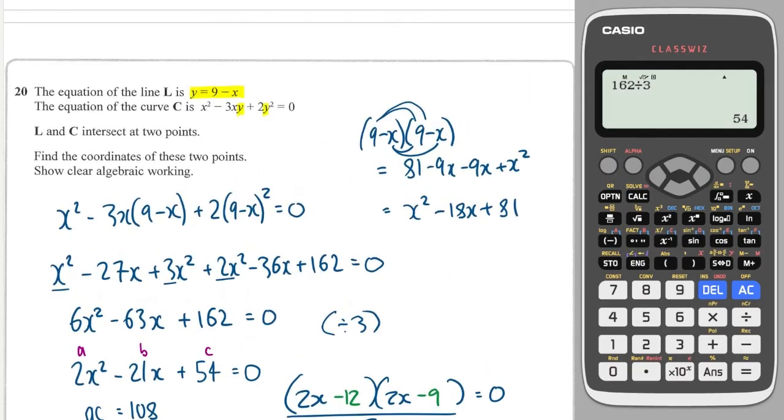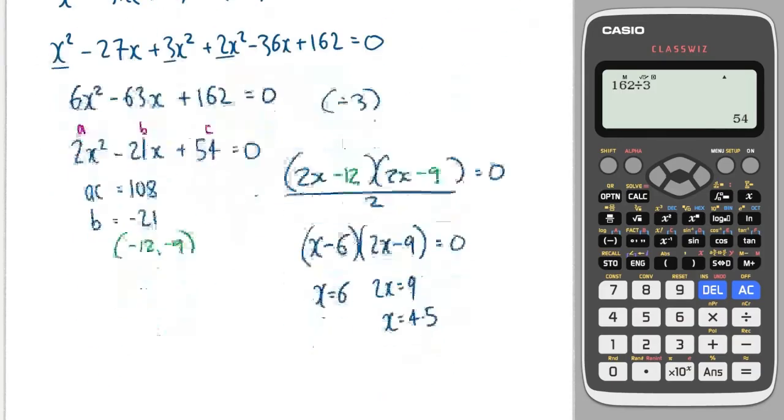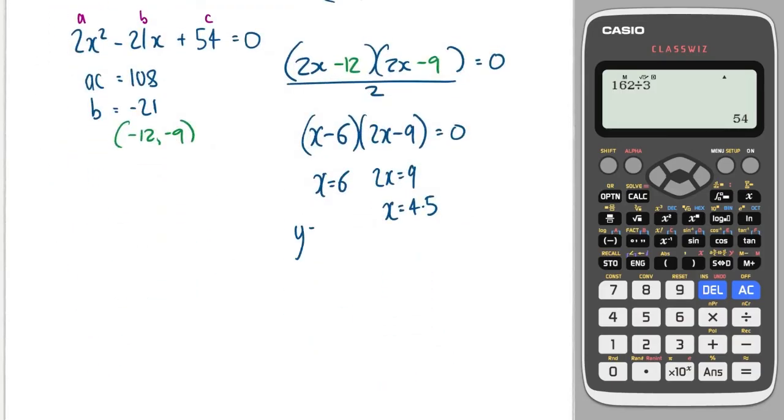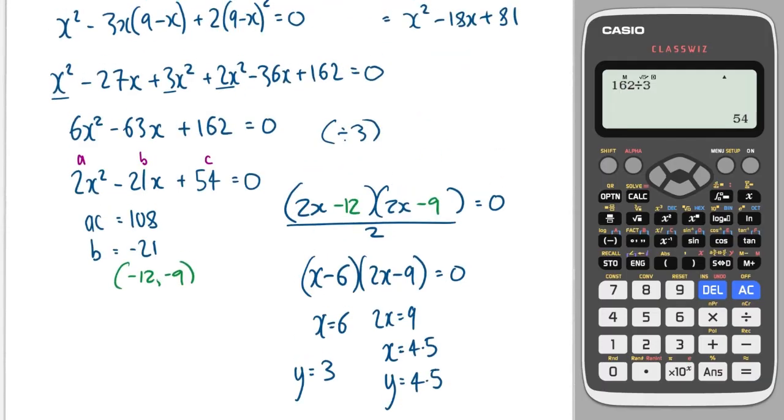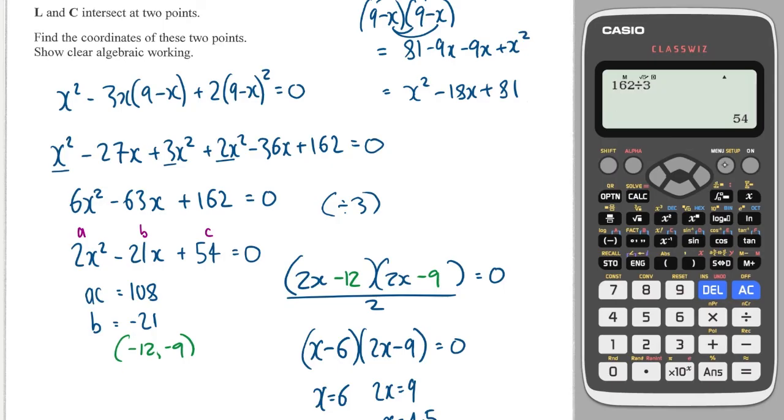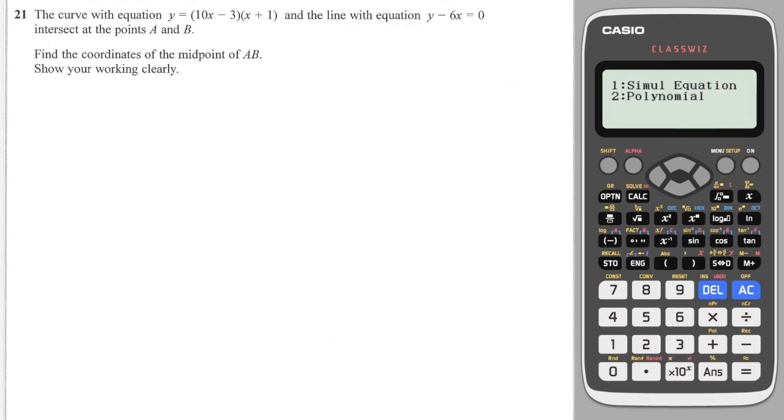Let's go back up and use our ready-made formula for y. So y is 9 minus the x value. So 9 minus 6 is 3, and 9 minus 4.5 is 4.5. And top tip, we could go into menu, down to equation, polynomial degree 2, and we could solve that original quadratic we found, which was 6 minus 63 and 162. And we get 6 and 4.5. Very good.